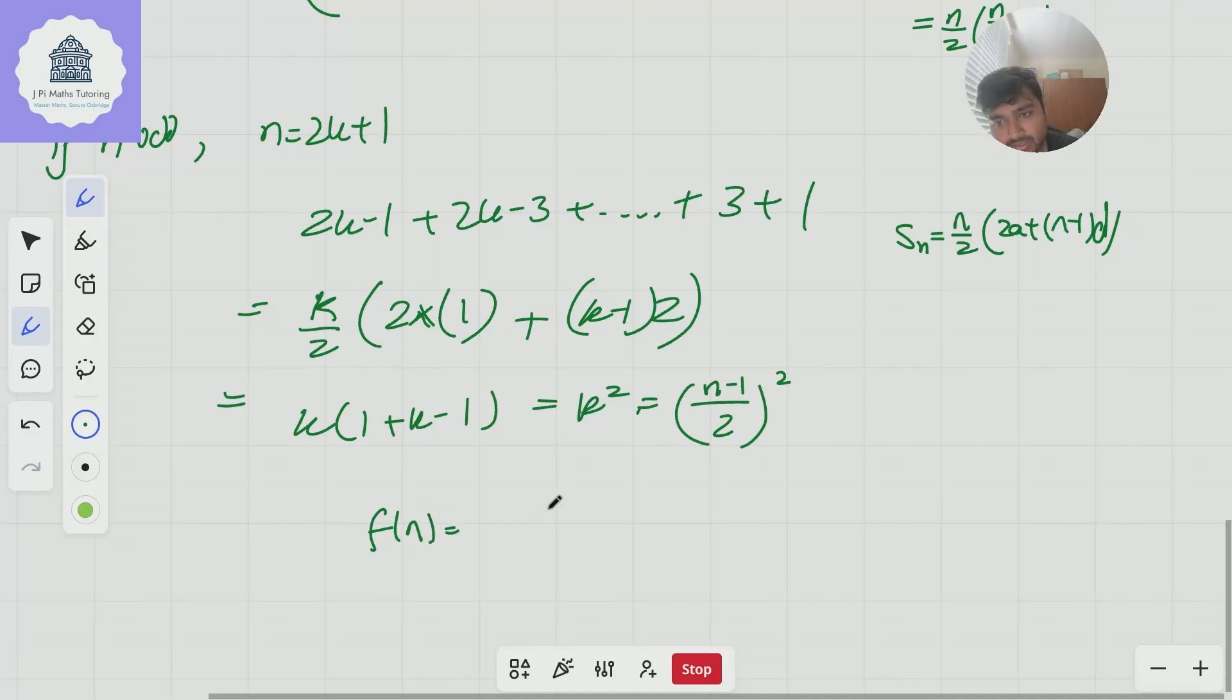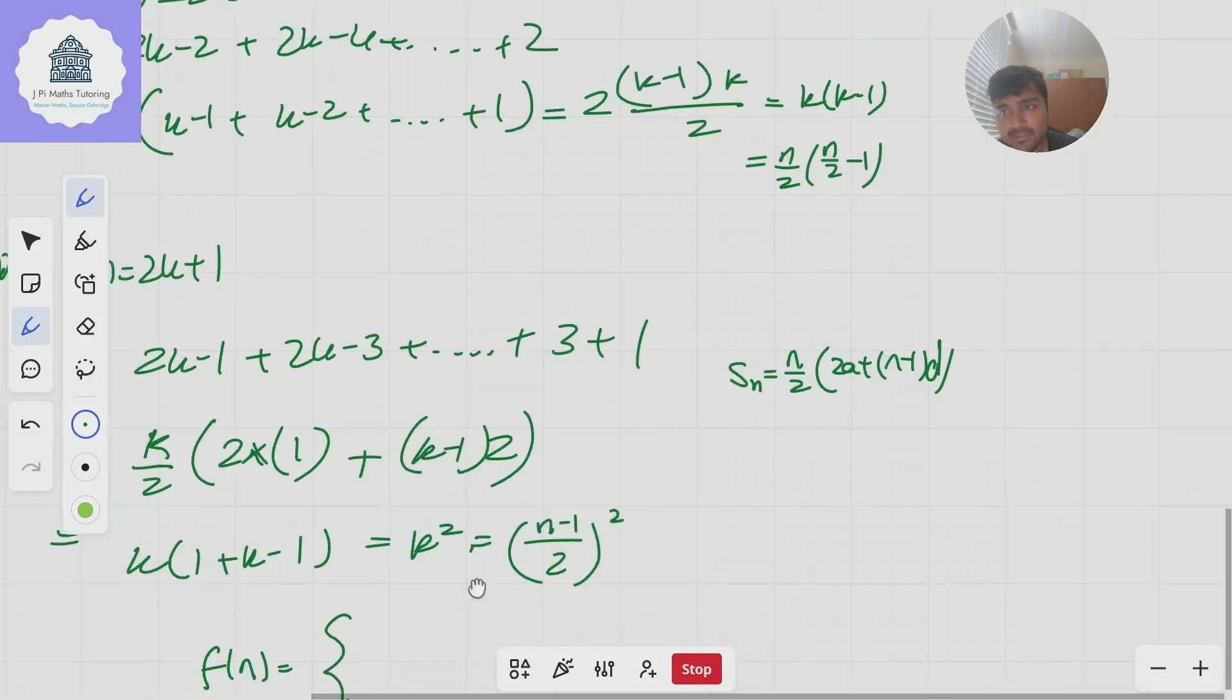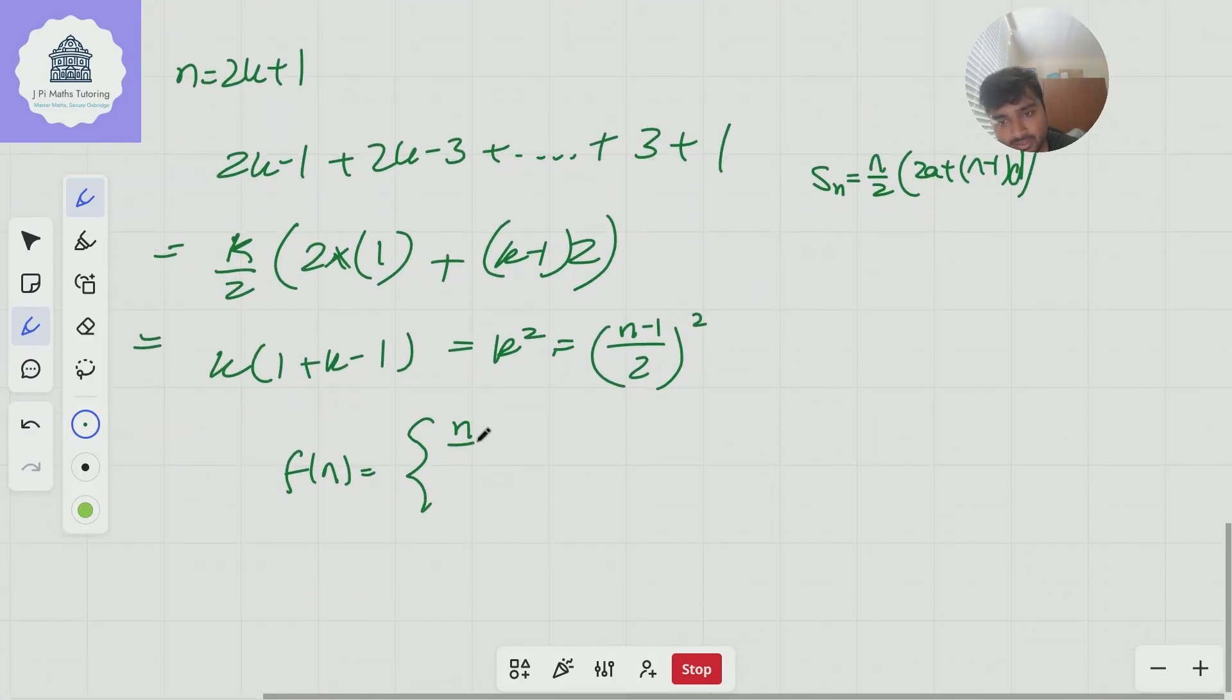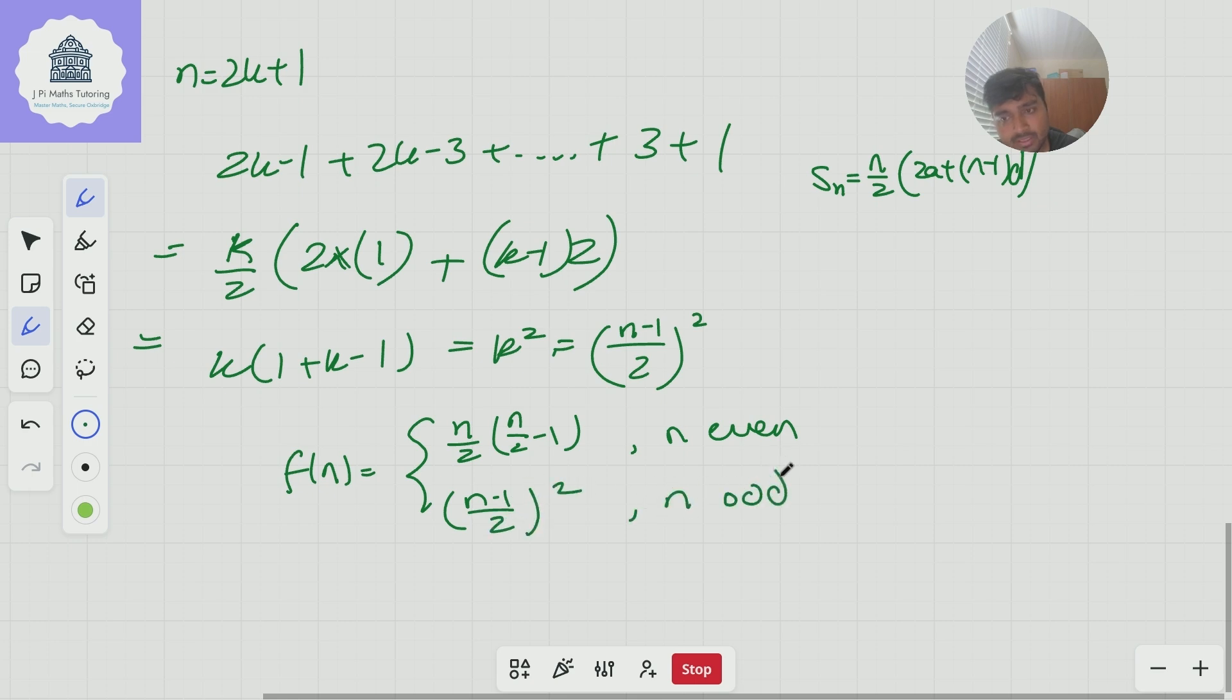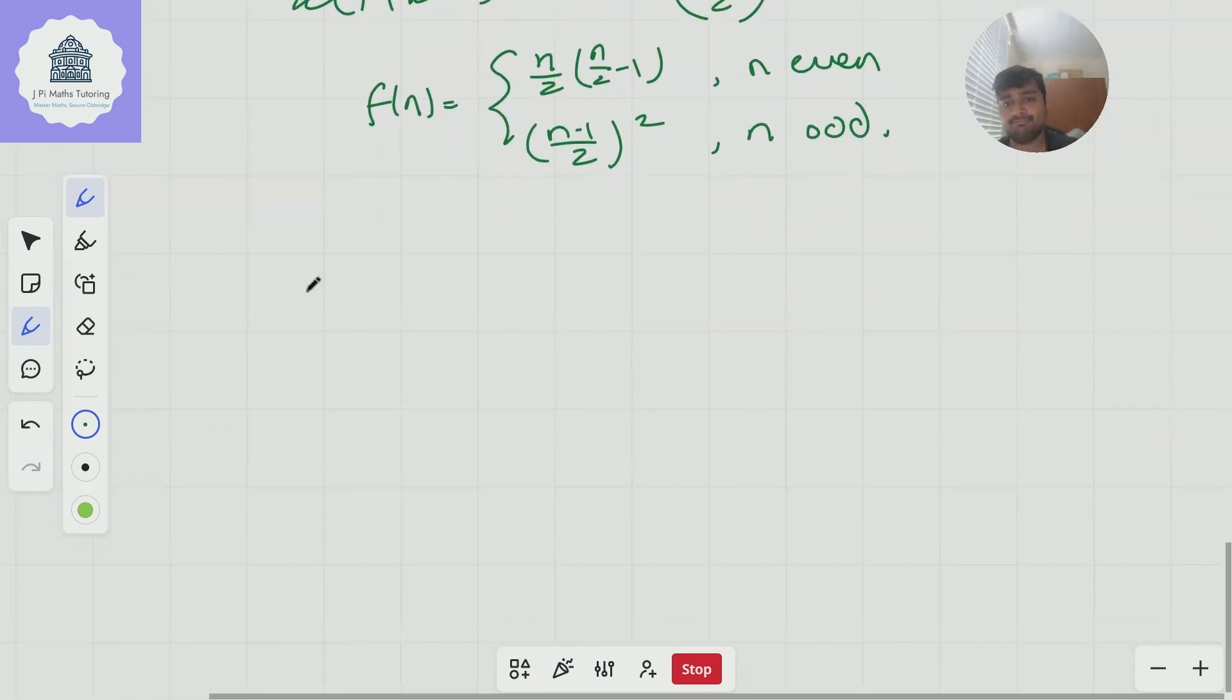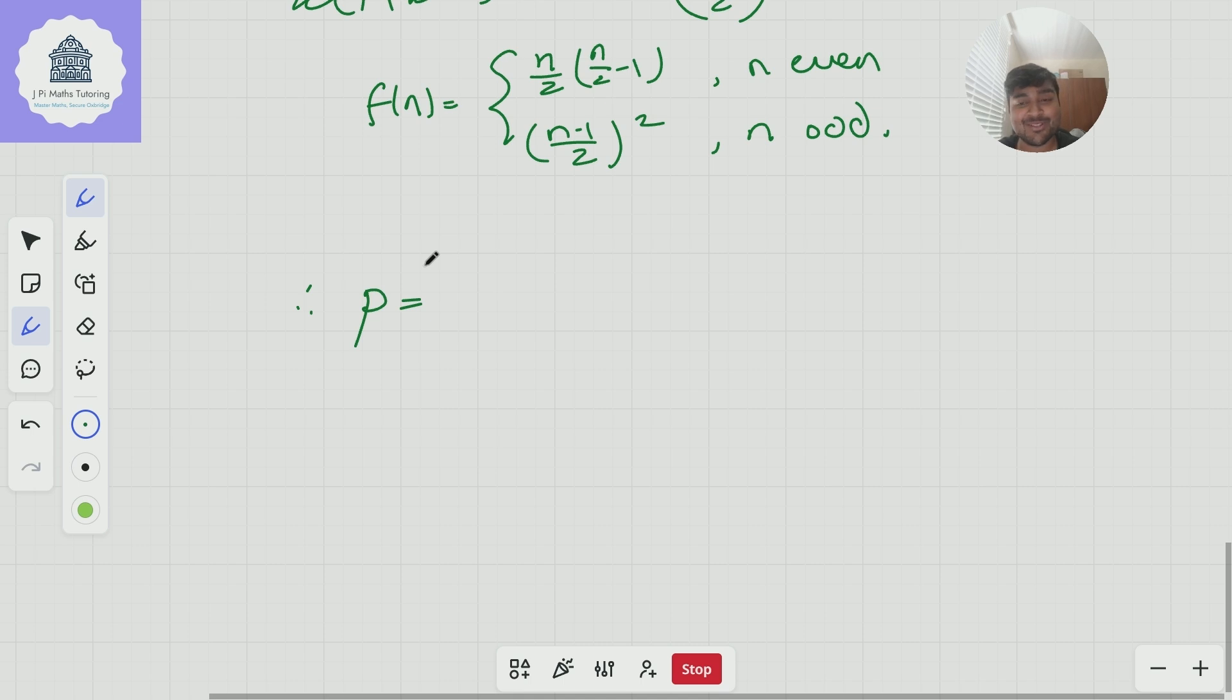Okay cool and so I'm just going to call this kind of f of n. So f of n equals either n over two times n over two minus one that's if n is even or it's going to equal n minus one over two squared when n is odd. And so therefore the, I'll call this probability p, the thing that we're interested in, the probability that the three randomly chosen sides form a right angle triangle is simply going to be f of n over n choose three.